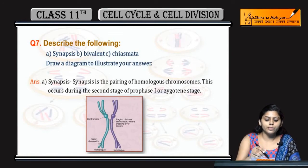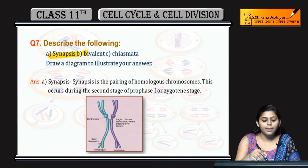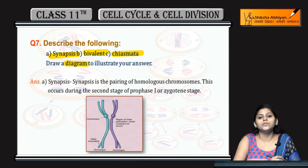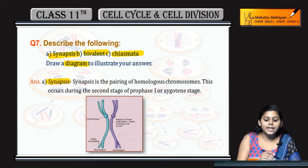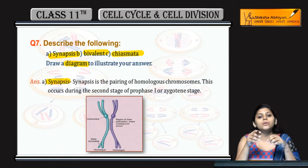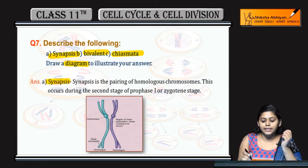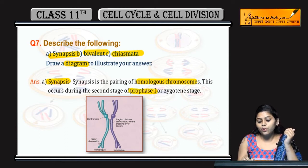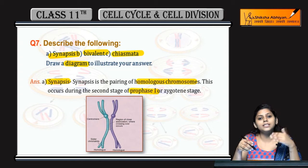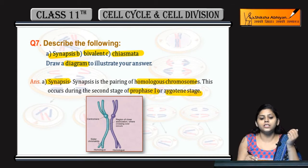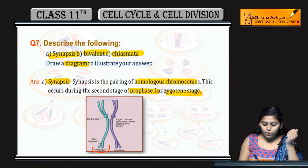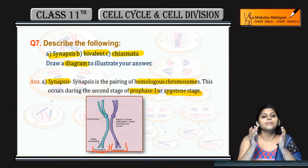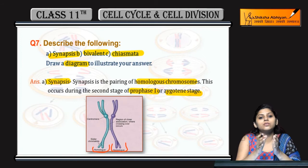Next is question number 7: Describe the following — Synapses, Bivalent, and Chiasmata. Draw a diagram to illustrate your answer. First of all, what is synapses? Synapses is when homologous chromosomes are paired. This happens during Prophase I of Meiosis I, specifically in the Zygotene sub-stage. You can see two homologous chromosomes are paired with a close association.